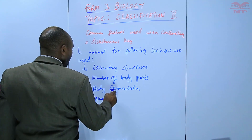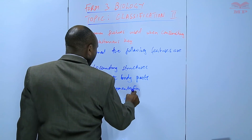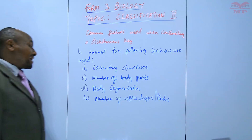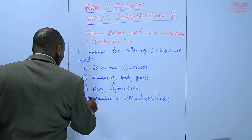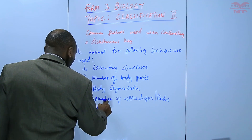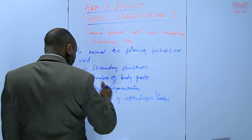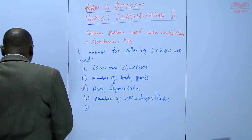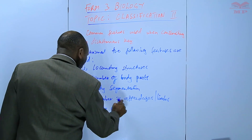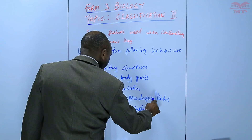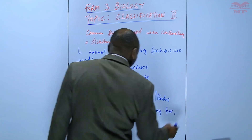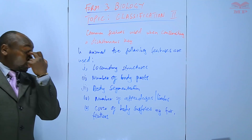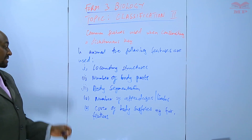We can use the number of appendages or limbs — how many fore limbs are there, how many hind limbs are there. We can use body surfaces, specifically the cover of body surfaces. For example, there are those whose body surfaces are covered by fur, and those that are covered by feathers. These are some of the features used when constructing a dichotomous key for animals.